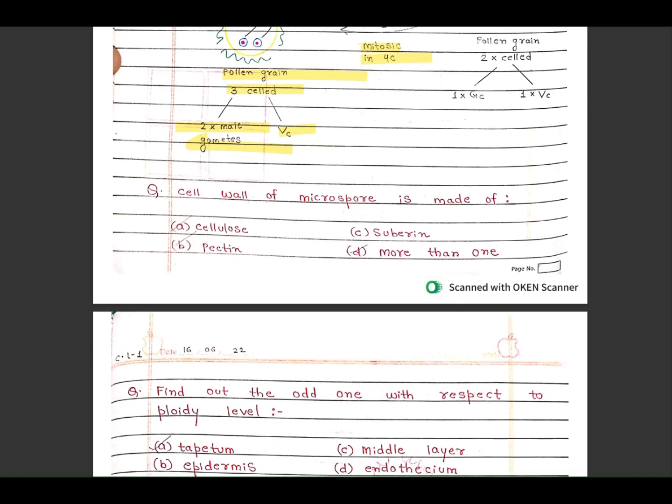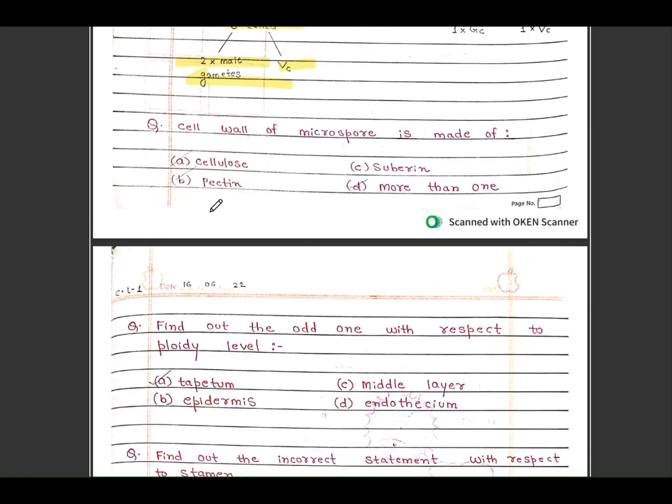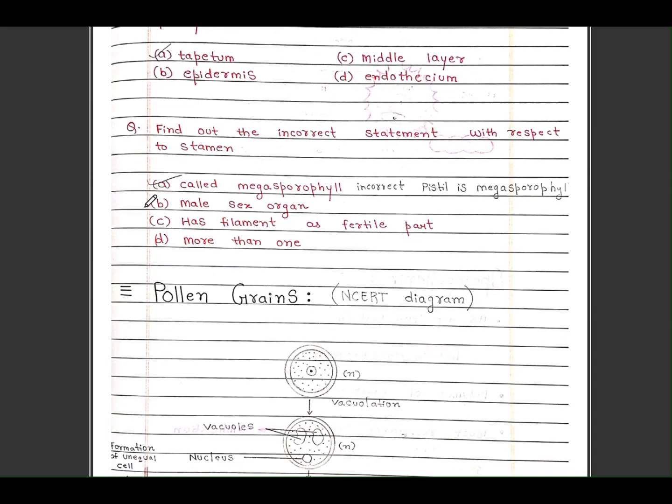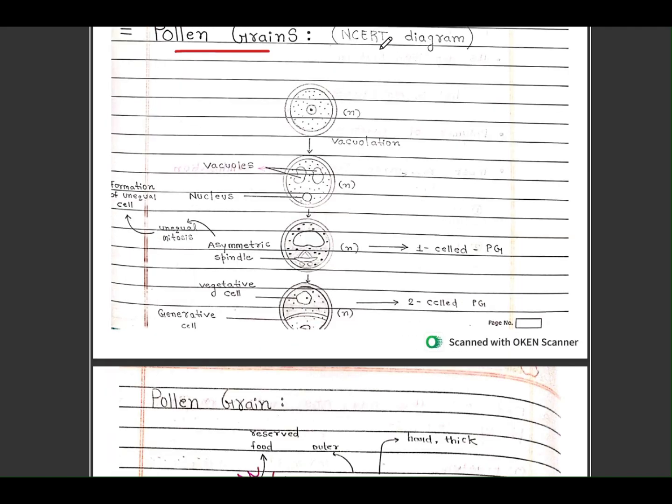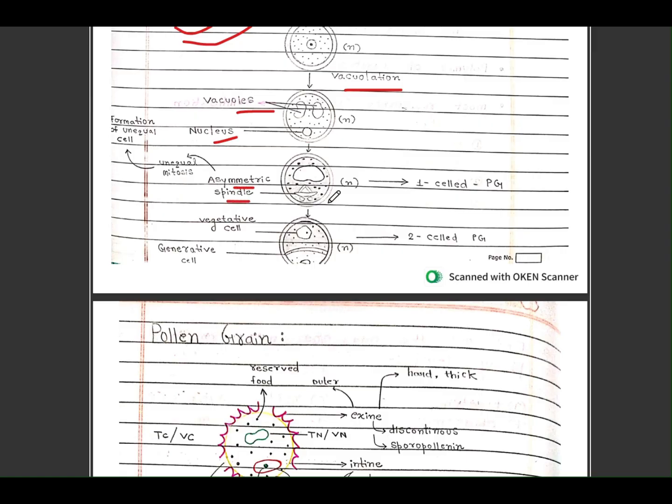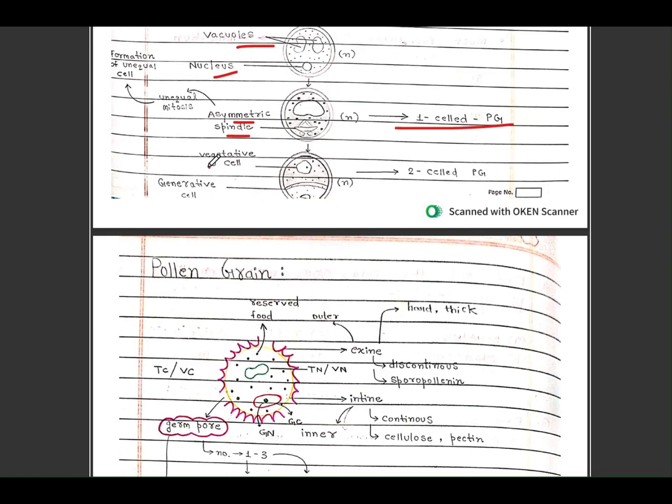Here some important MCQs are there. You can watch here. Now pollen grains, NCERT diagram is given here, learn this. It is asked in the exams. First vacuolation occurs, vacuoles are formed, nucleus is formed, asymmetrical spindle forms. One cell pollen grain develops. Vegetative cell is formed, this is the vegetative cell, and this is the generative cell. Two-cell pollen grain is formed.